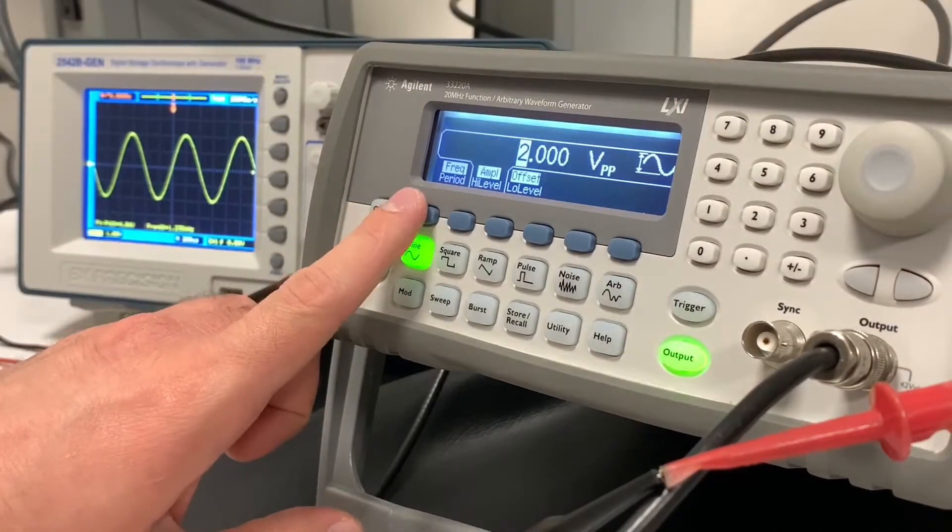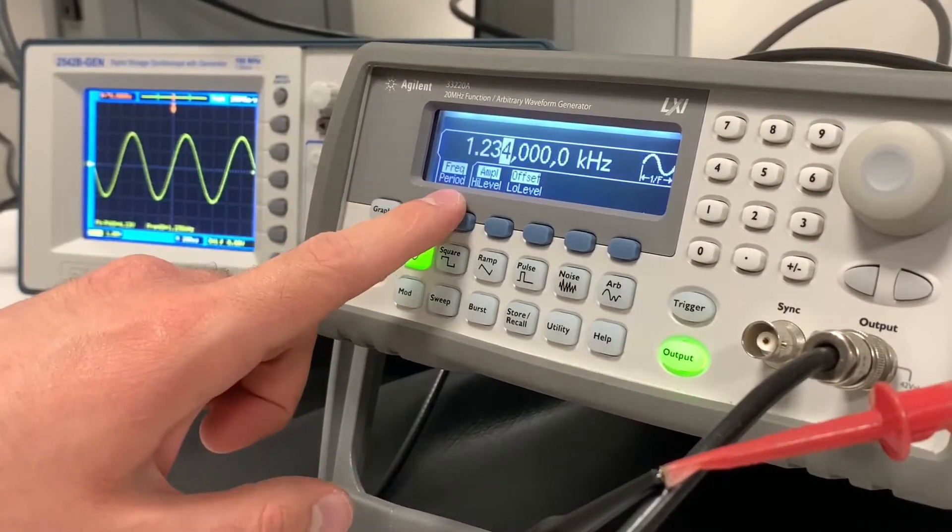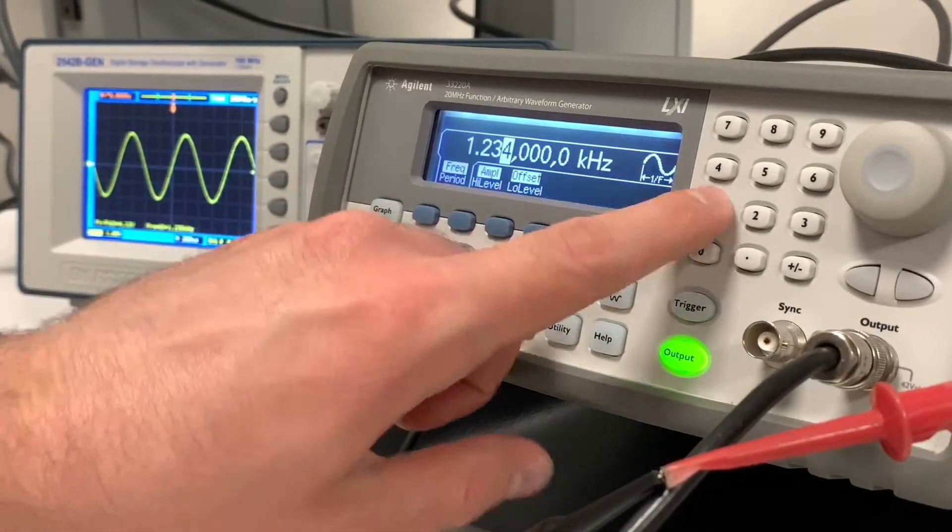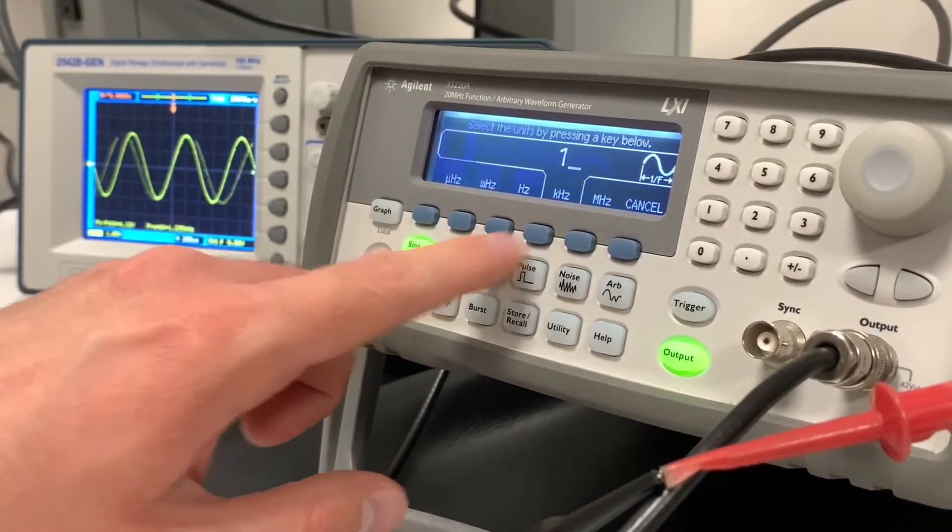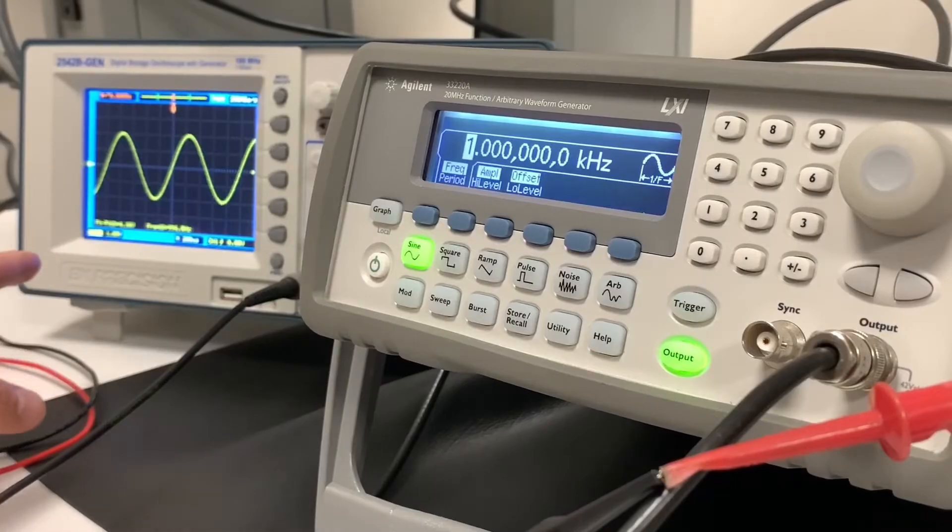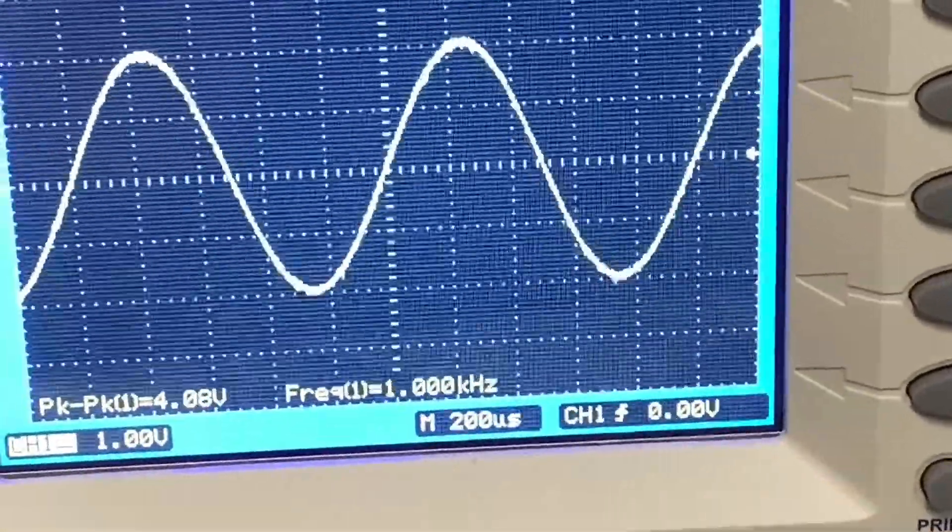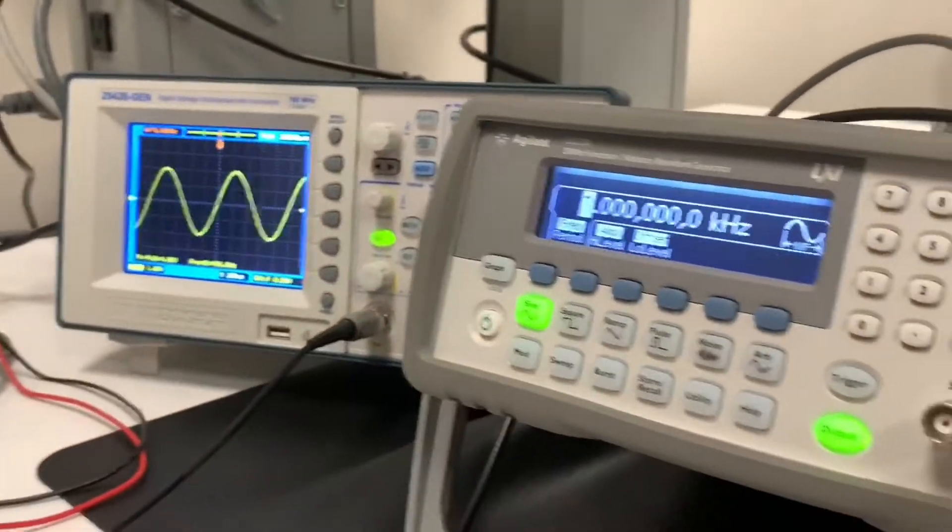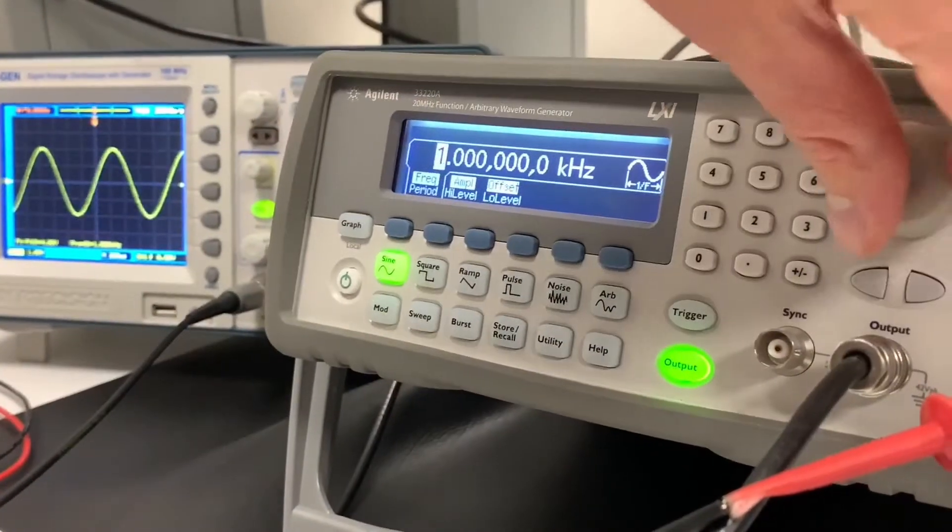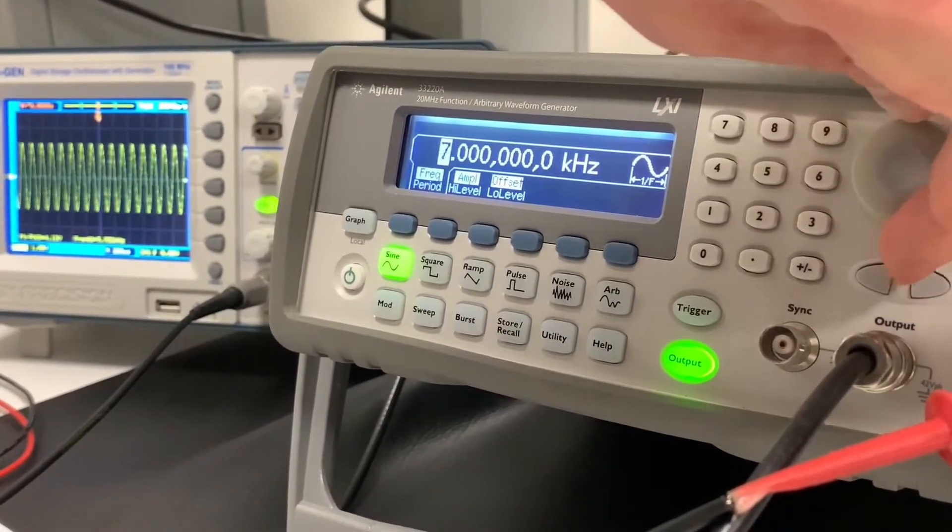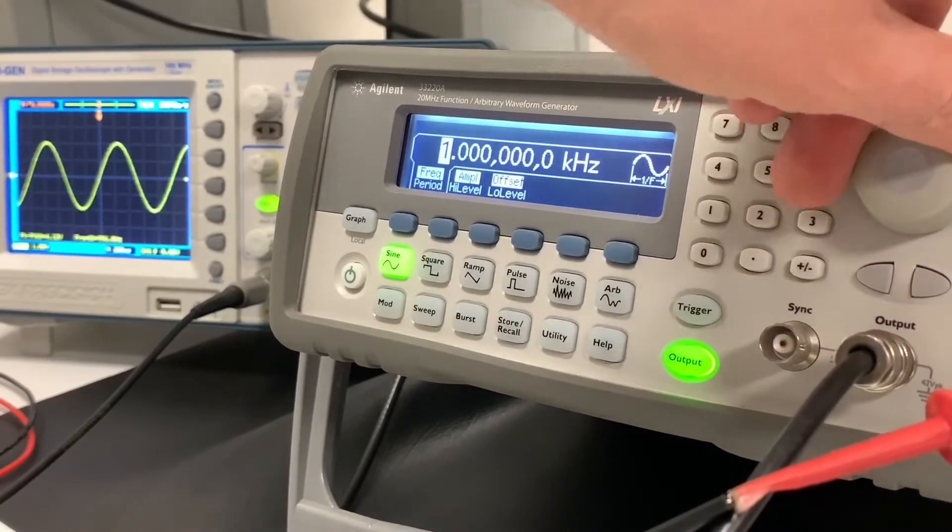And I can also click on the frequency button here. It takes me back to frequency. Then I can type in like one kilohertz. It's changed to one kilohertz on the oscilloscope. And then same as before, I can take the knob and just increase it and get an even higher signal, or get a lower signal the other direction.